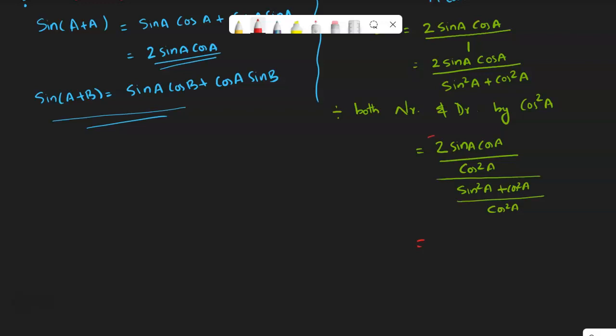Okay, so now see from this first part we can cancel cos a, both cos a from numerator. So it will be 2 sin a by cos a.